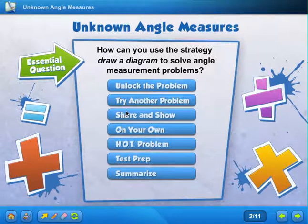Hi everyone, we are on lesson 11.5 and that is on page 435 in your colored math books. We're trying to figure out unknown angle measures today.